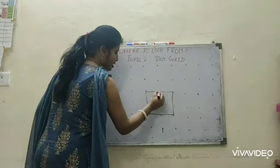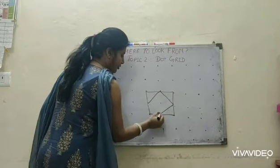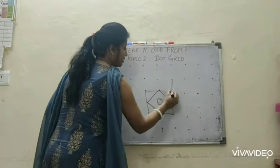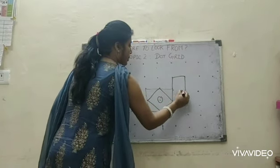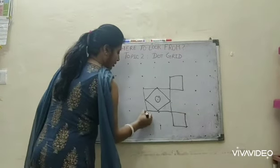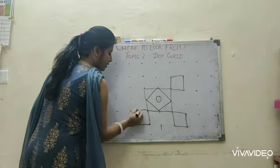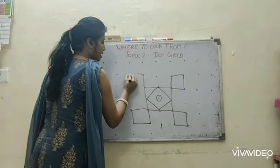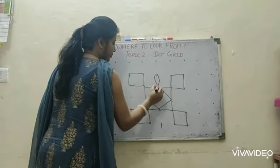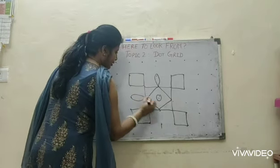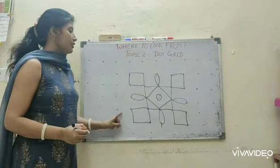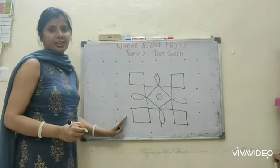We will join these dots with the help of different types of lines. Either it will be a slanting line, standing line, sleeping line or curved line. It will make a design. This is one of the designs which we will make with the help of dot grid.